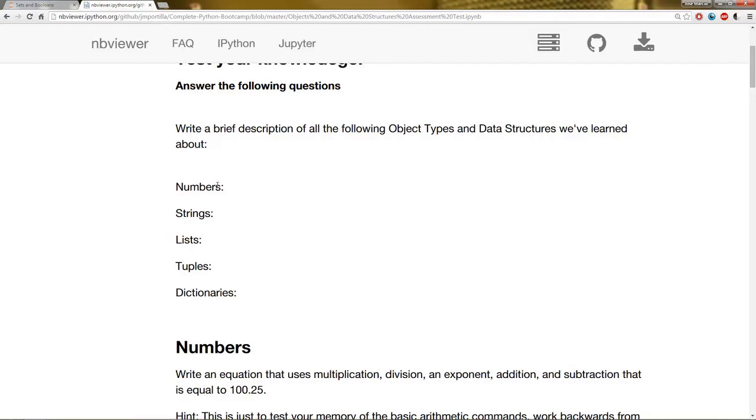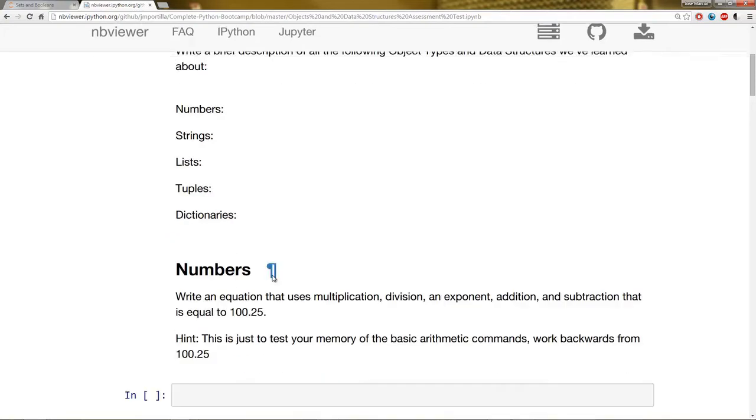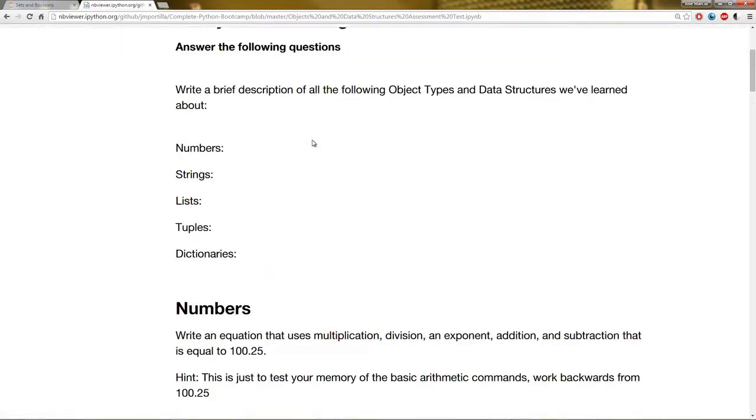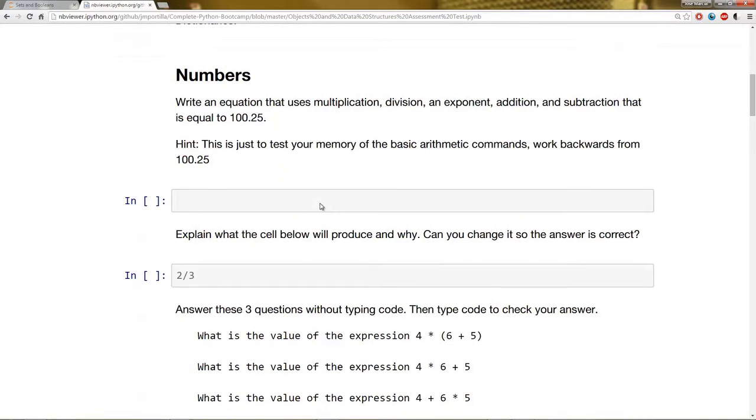First thing I want you to do is just write a brief description of the following object types and data structures we've learned about: numbers, strings, lists, tuples, and dictionaries. Don't worry about sets and booleans for this question. So then there's going to be a couple questions for each of the different object types or data structures we've learned about.